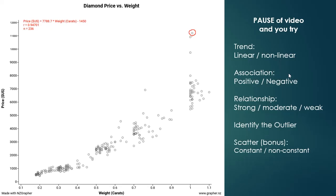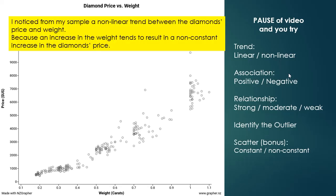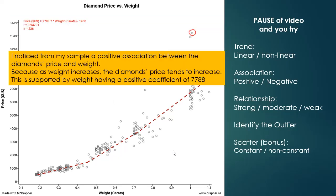The trend is non-linear: when the diamond's weight is lower, the relationship is flatter, and as the weight increases the relationship gets steeper. So there is a non-constant increase in the diamond's price — a shallower gradient at low weights and a steeper gradient at high weights. The association is positive: as weight increases, price tends to increase, supported by the positive coefficient of weight.